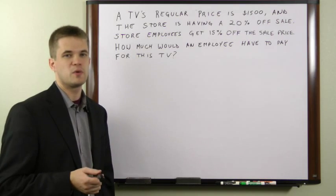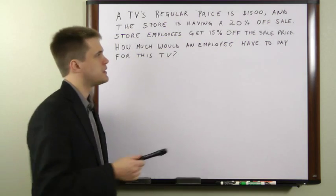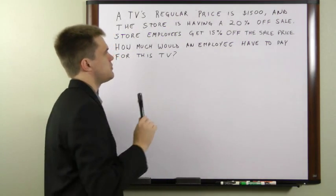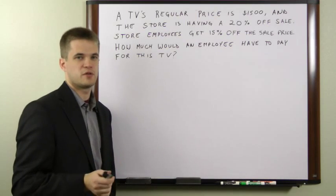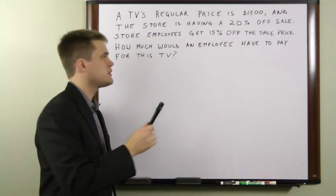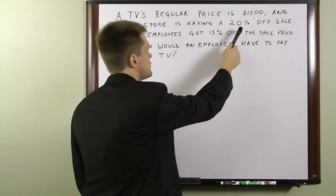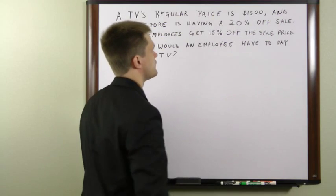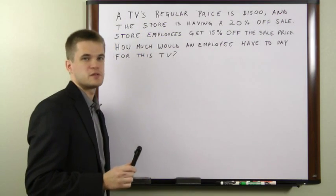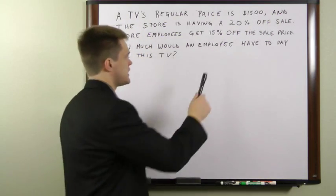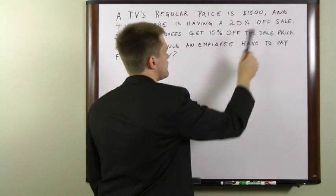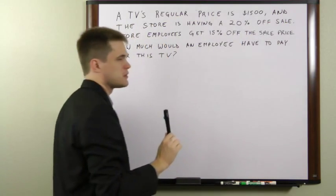The mistake that many people make is they see 20% and 15% and they add those together to get 35%, and then they take 35% off of $1,500. The problem with this is that they're taking the 15% off of the regular price, not off of the sale price.